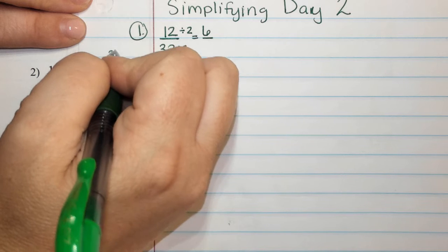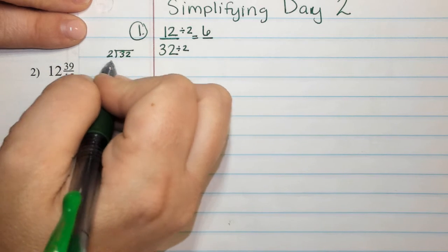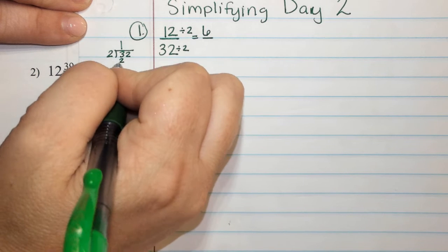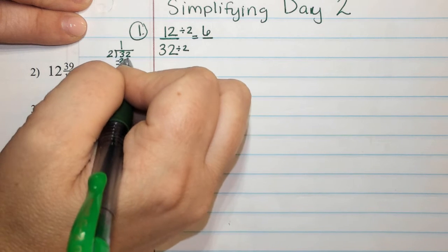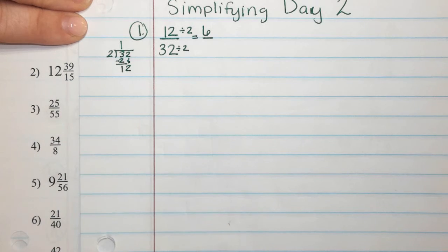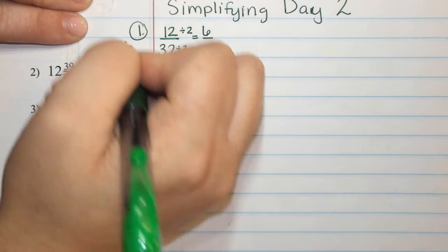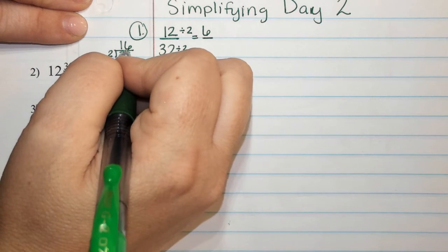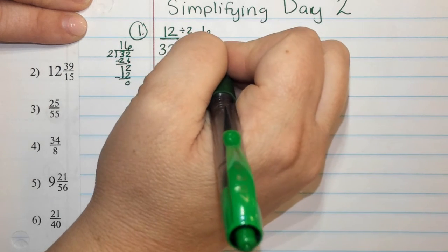So I'm going to come over here. Two divided into 32. Two will go into three once, that gives me two. I subtract, I get a one. Bring down the two. Two will go into 12 six times. So 32 divided by two is 16.